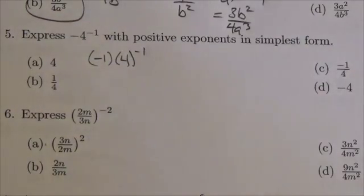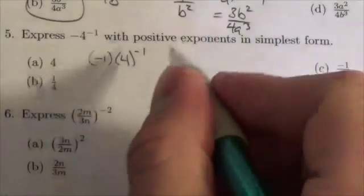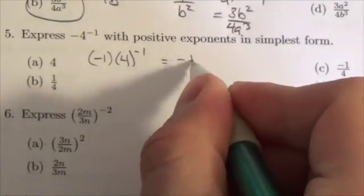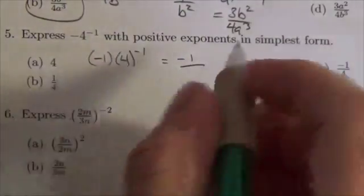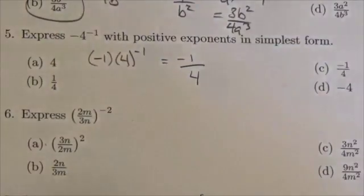We know that a negative exponent causes a reciprocal to happen, so this would be the same as negative 1 divided by, because that's going to push this into the denominator, 4 to the 1.